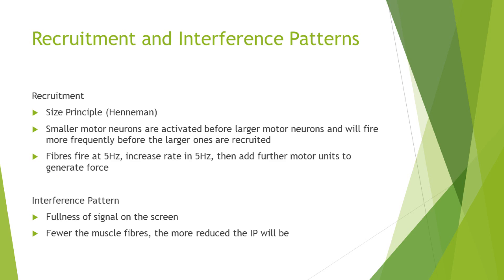Let's briefly talk about recruitment and interference patterns, because it's important to understand this for the next section. When we're talking about recruitment, we're talking about the size principle — the Henneman principle — where the smaller motor neurons are activated before the larger motor neurons in a very orderly way. When trying to generate force, first we start seeing the smaller motor units being activated, then the larger motor units. The interference pattern refers to the fullness of signal on the screen, and the fewer the muscle fibers that can be recruited, the more reduced the interference pattern will be.